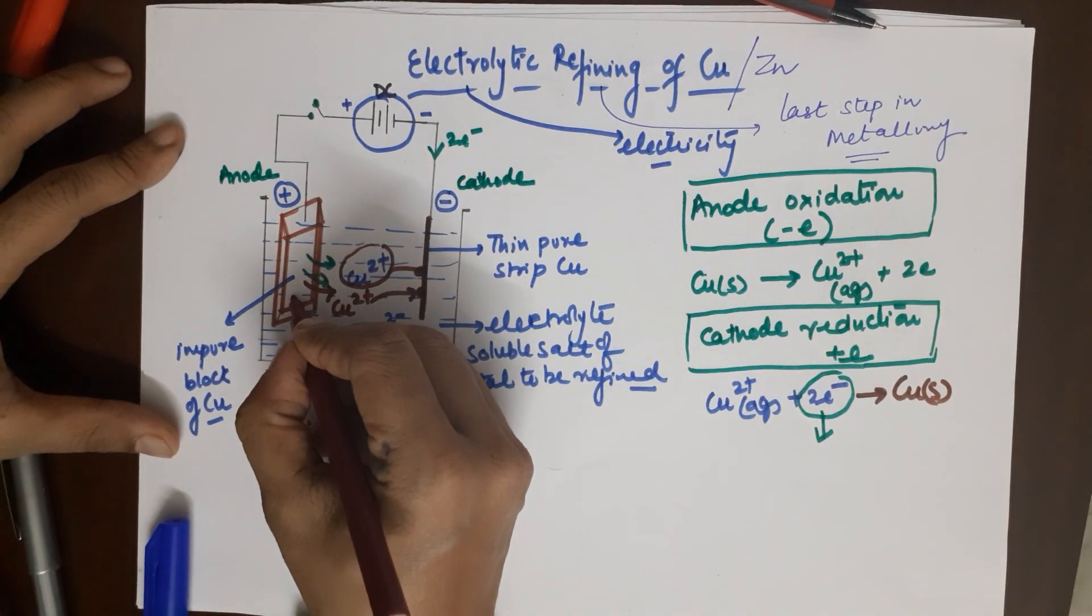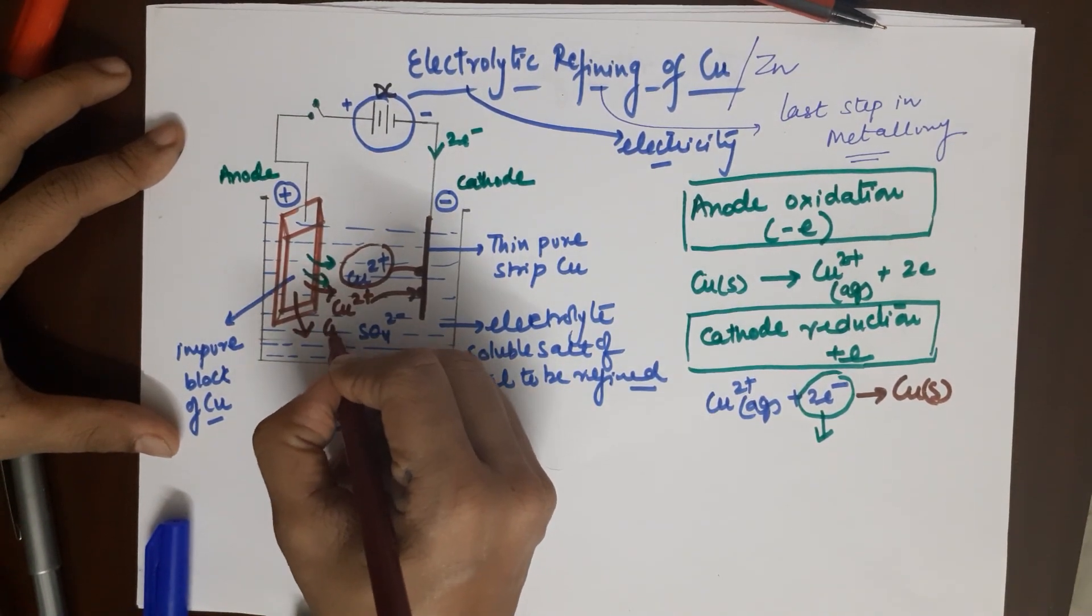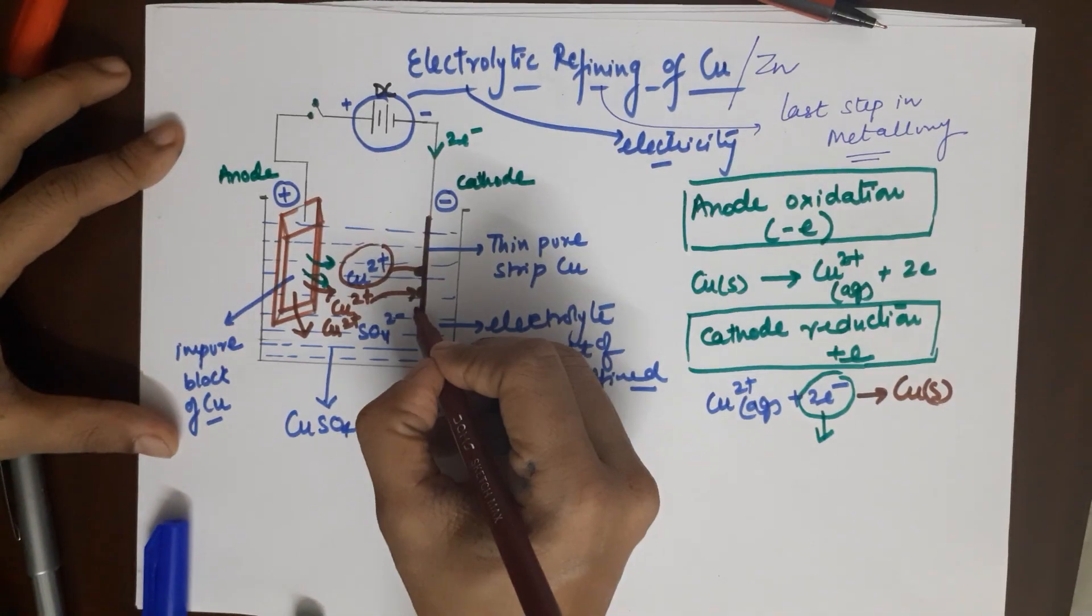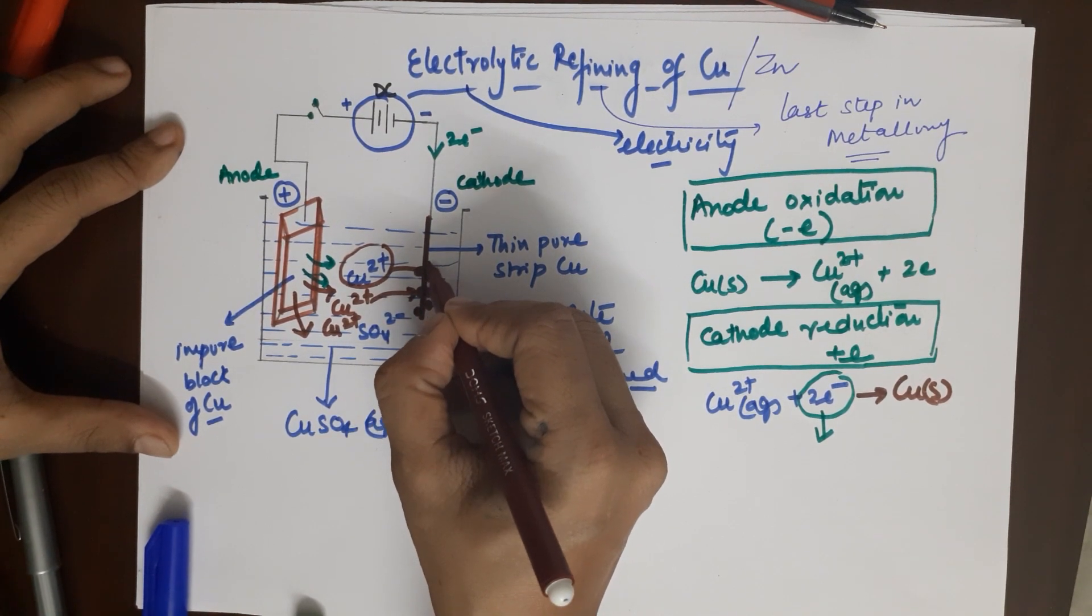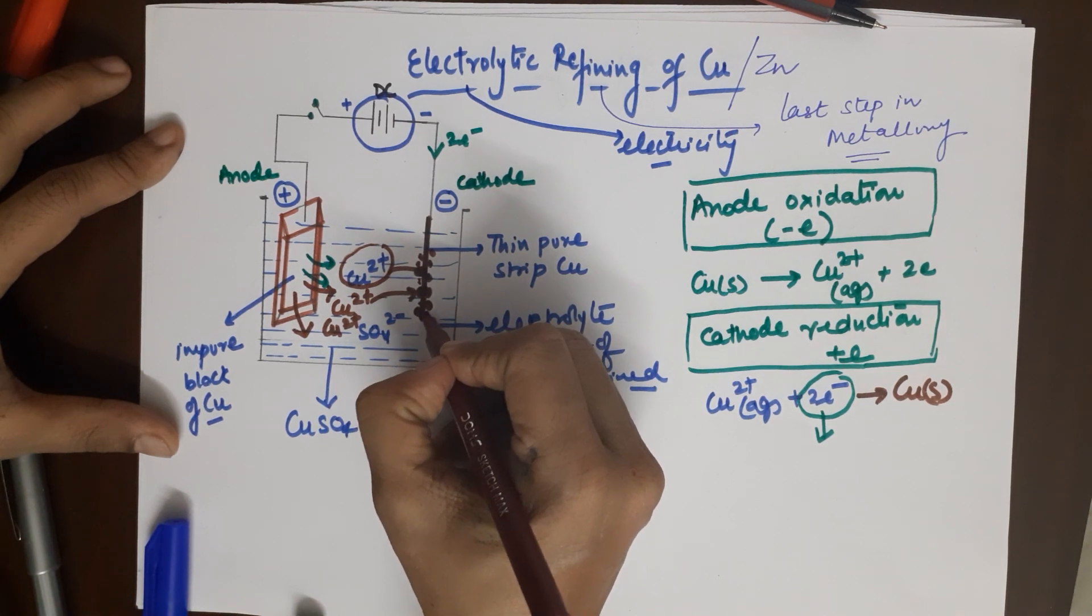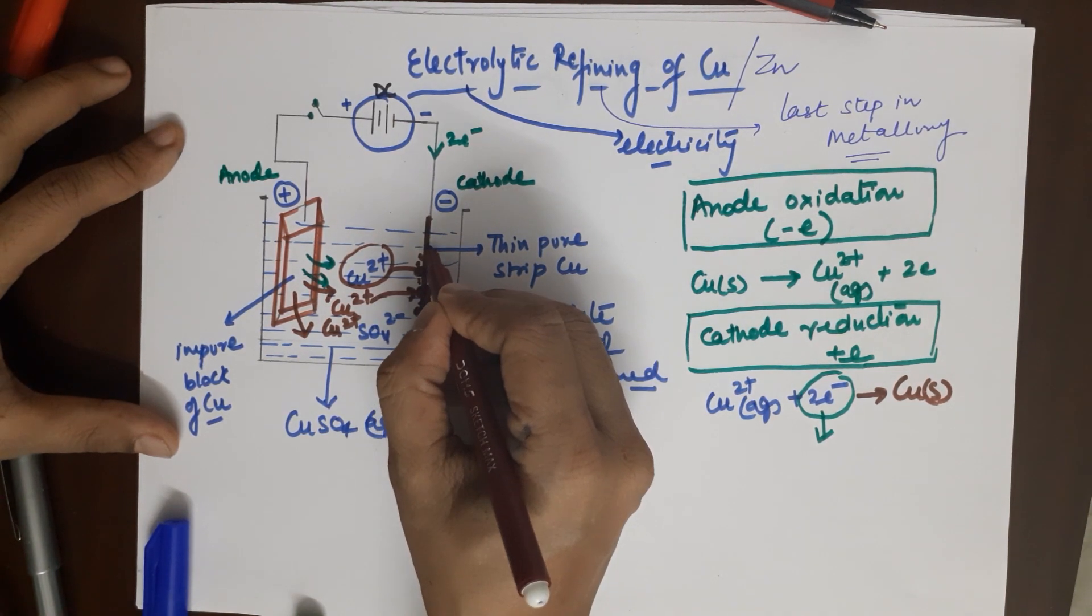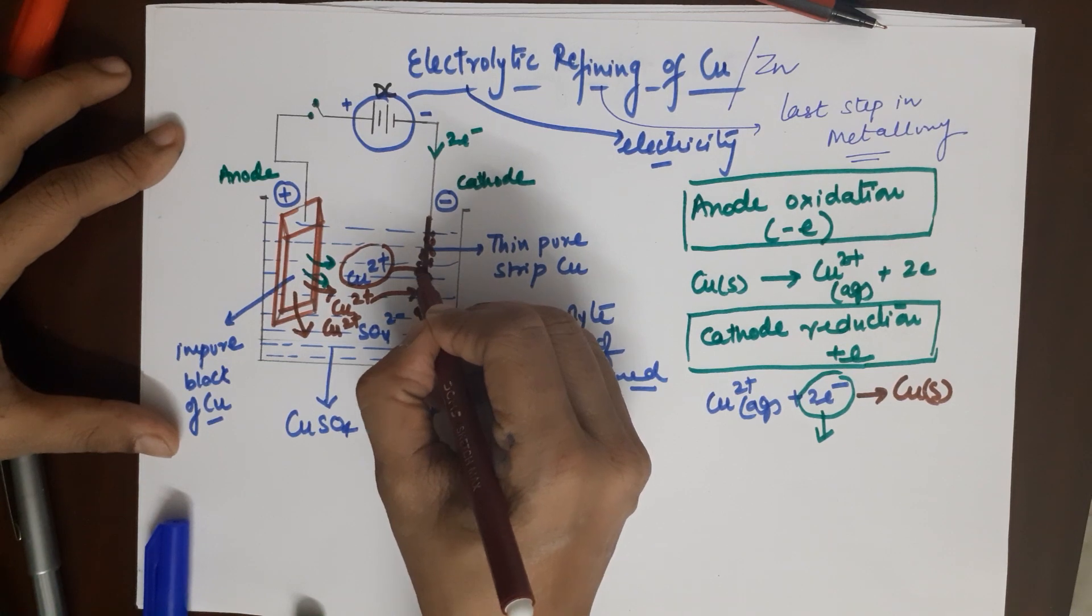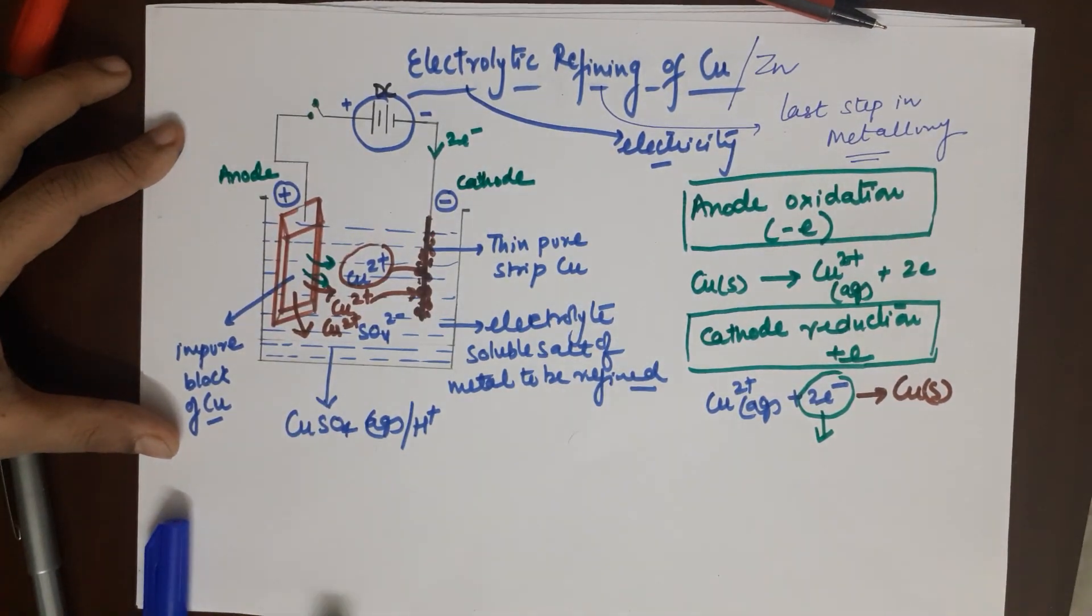Your copper ion from the solution goes and deposits here. Copper ions are moving out from the anode and are continuously depositing on the cathode. Your cathode would go on becoming thicker and thicker with pure copper on it.